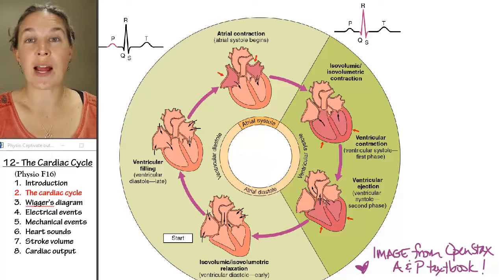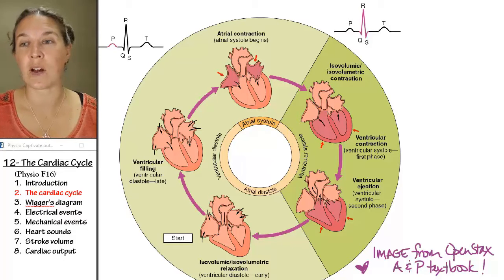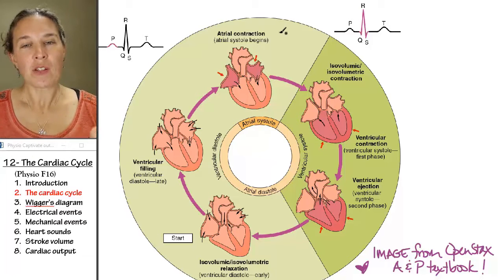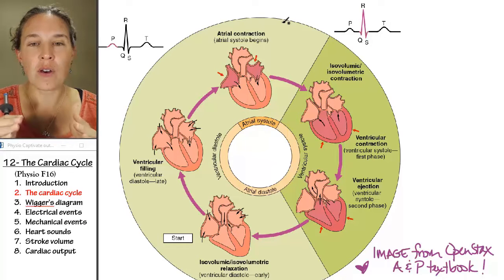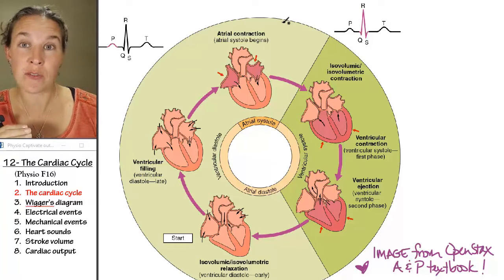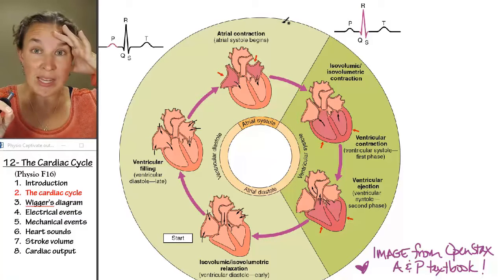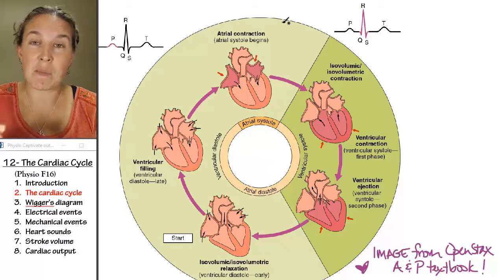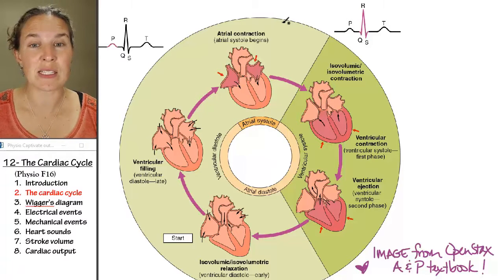I want to talk about the things we're going to keep track of when we look at the entire cardiac cycle — all of the events that take place in one heartbeat. We've got that little thin thread of autorhythmic tissue going through the whole heart, and that coordinates beating. But most of the heart is made of contractile muscle tissue — 99% of it is contractile muscle tissue.